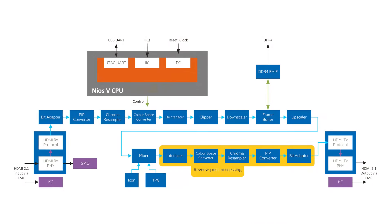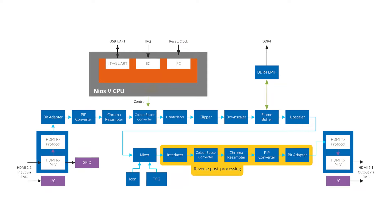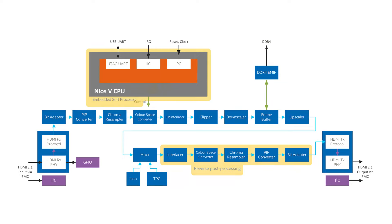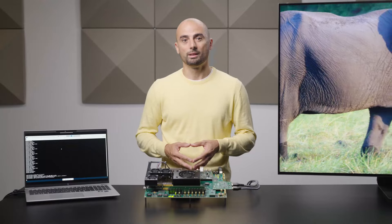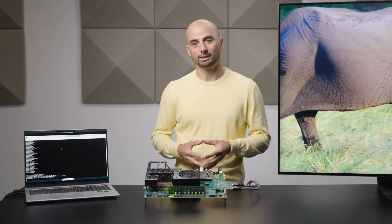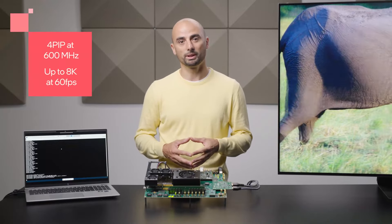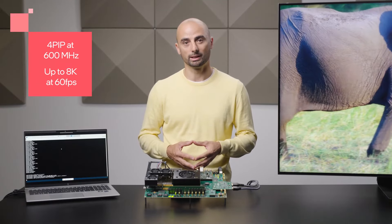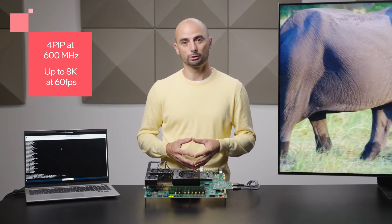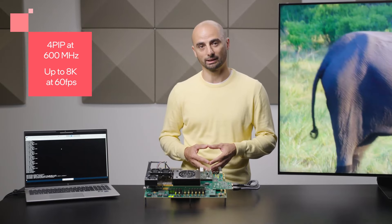The back end of the pipeline consists of similar pre-processing cores in reverse order. For overall system control we use a NIOS 5 soft embedded processor. The main pipeline is configured to process 4 pixels in parallel at a 600 MHz clock rate, thus supporting video resolutions of up to 8K at 60 frames per second.